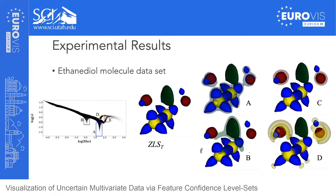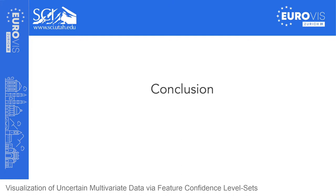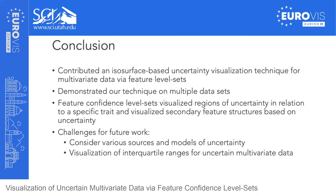This essentially conveys the proximity of the traits in attribute space, the uncertainty in the data, and some of the challenges pertaining to trait definition to isolate features. To conclude, we contributed an isosurface-based uncertainty visualization technique for multivariate data via feature level sets, demonstrated on multiple datasets. Feature confidence level sets visualized regions of uncertainty in relation to a specific trait and visualized secondary feature structures based on uncertainty. Future work includes considering various sources and models of uncertainty — for example, visualizing uncertainty of data compressed using ZFP — and visualization of interquartile ranges for uncertain multivariate data.